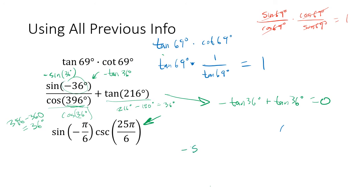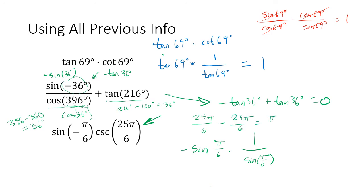For the pause problem: the sine of negative pi over 6 — since sine is odd, that's negative sine of pi over 6. Times 1 over sine of 25 pi over 6 — that's cosecant of 25 pi over 6. Cosecant is periodic every 2 pi. 25 pi over 6 minus 2 pi times 2 equals 25 pi over 6 minus 24 pi over 6, which is pi over 6. So cosecant of 25 pi over 6 equals cosecant of pi over 6, which is 1 over sine of pi over 6. So we have negative sine of pi over 6 divided by sine of pi over 6, which is just negative 1.